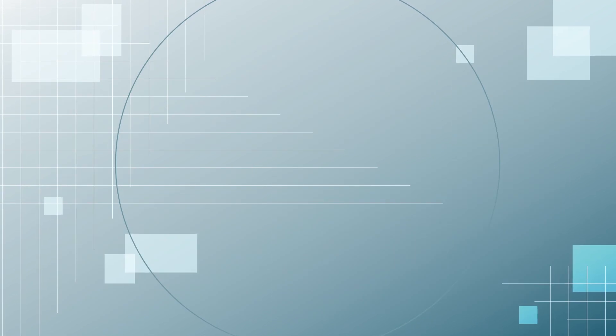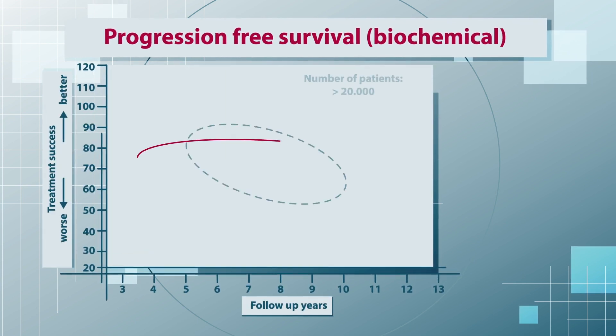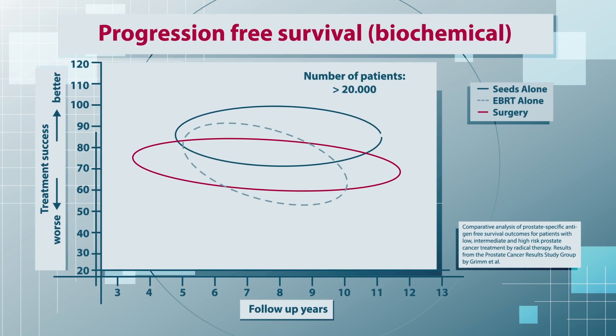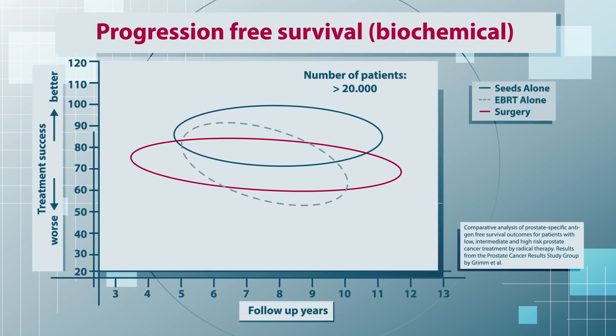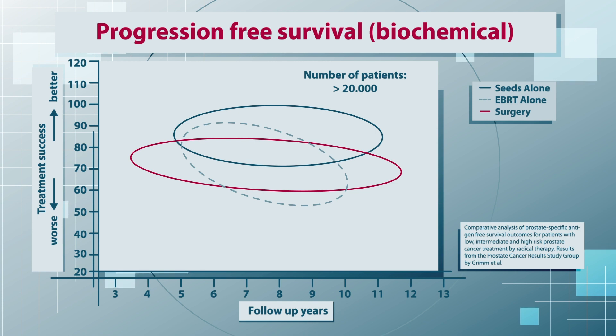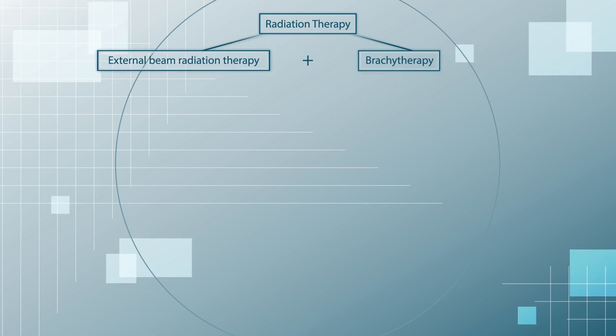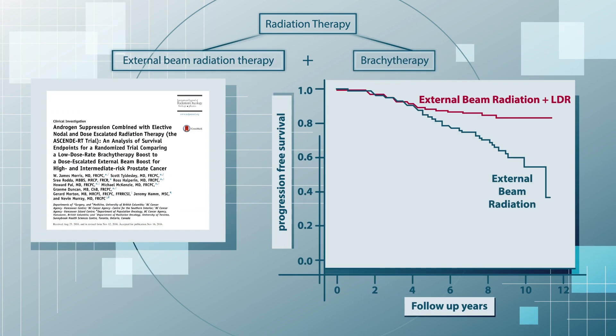Based on the PSA progression, it was possible to determine that a large majority of the treated patients survive without further tumour growth. The findings of the presented study suggest that in terms of the successful treatment of the tumour, brachytherapy provides superior outcomes in comparison to other treatment options. For the higher risk groups, the combination of brachytherapy with external radiation therapy has established itself as the international standard.